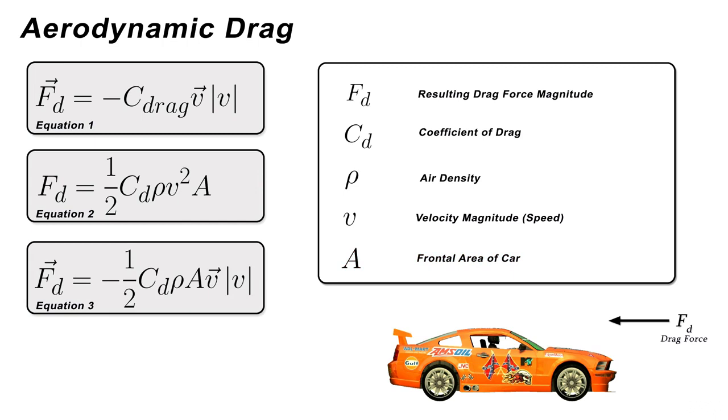Now under normal circumstances, properties such as the drag coefficient of the car, the air density, and the frontal area of the car will not change while the simulation is running, so there is no need to compute them each time. Only the velocity is changing.